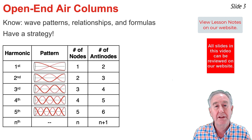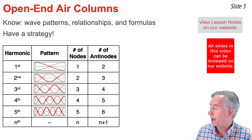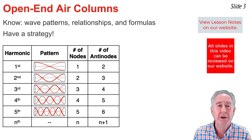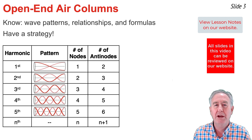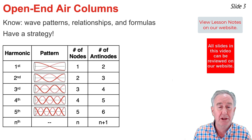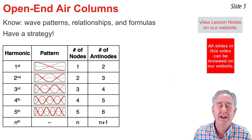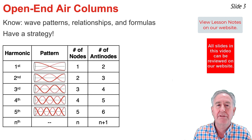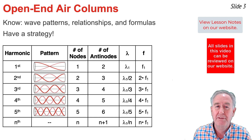For instance, in the first harmonic, there's one half of a wave being displayed within the length of the air column. So length equals one half times wavelength. Doing some algebra, the wavelength would be equal to twice the length. Once you know the wavelength of the first harmonic, you can find the wavelength of any harmonic.